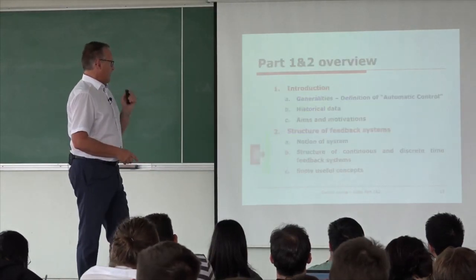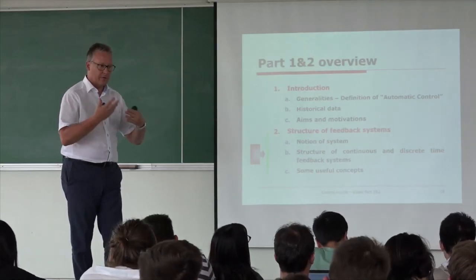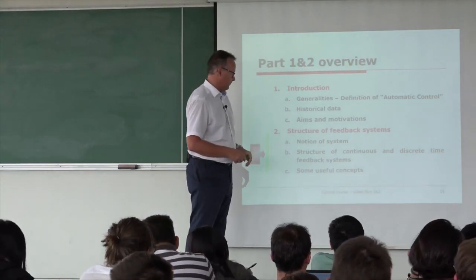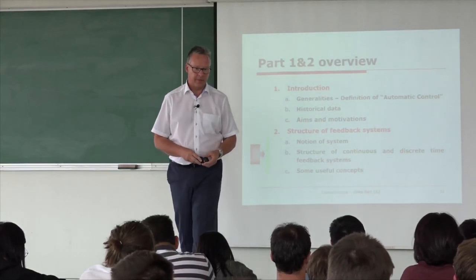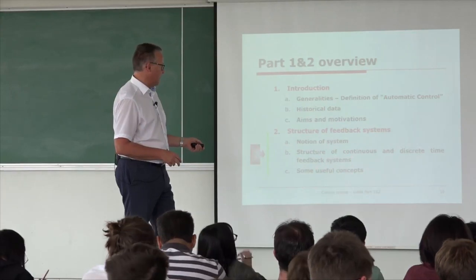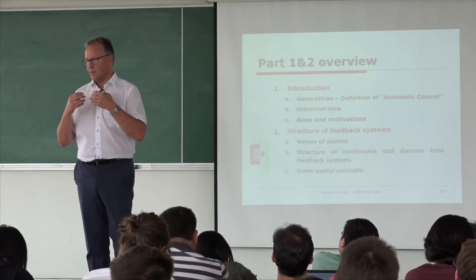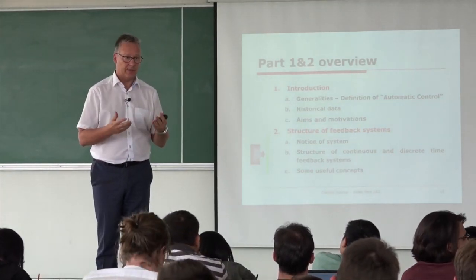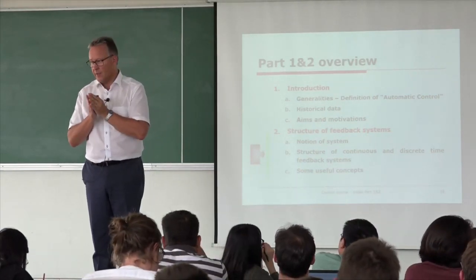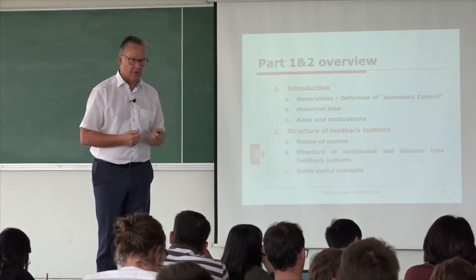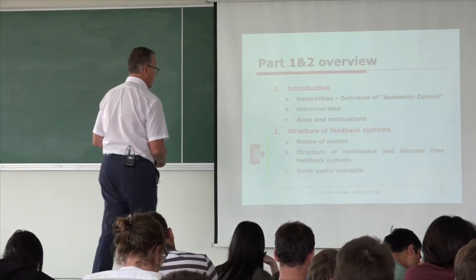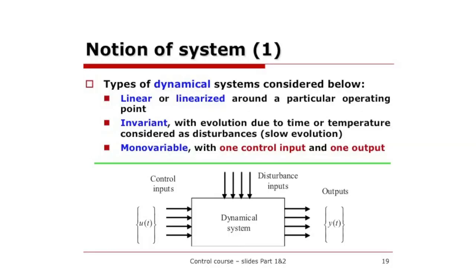Feedback systems — what are the tools? We will go back to the notion of system, then show the structure of continuous and discrete type feedback systems, and finish with some useful concepts — how to define performances, how to quantify the goal we want to reach, and when we can say we have a good control law. Systems: we will not consider all potential systems because it's too wide. We have enough to do with dynamical systems — when you inject a signal to your system it will react, but not immediately. There will be a transient — that's the dynamic of your system.